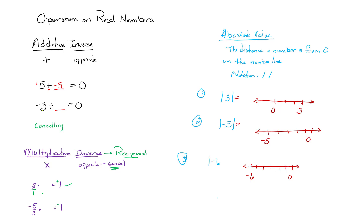Now let's look at the next one. If I take negative 3, what can I add to it to cancel it out, to zero it out, to neutralize it? If you said positive 3, you're right. So remember, when we're talking about additive inverse, we are canceling — we are making it equal 0.